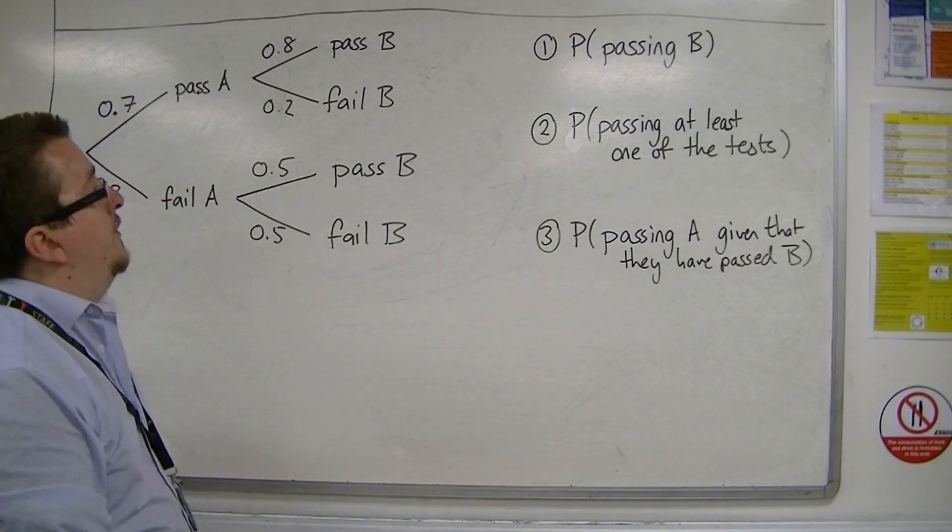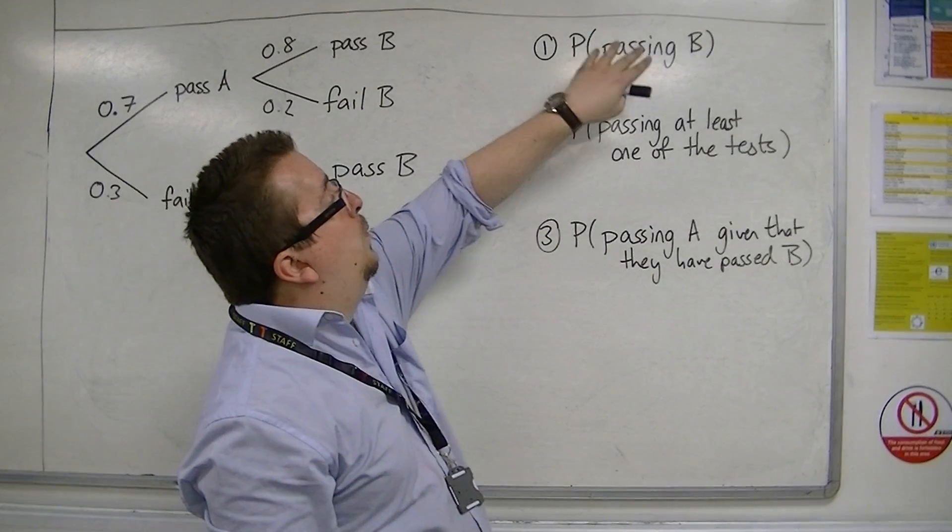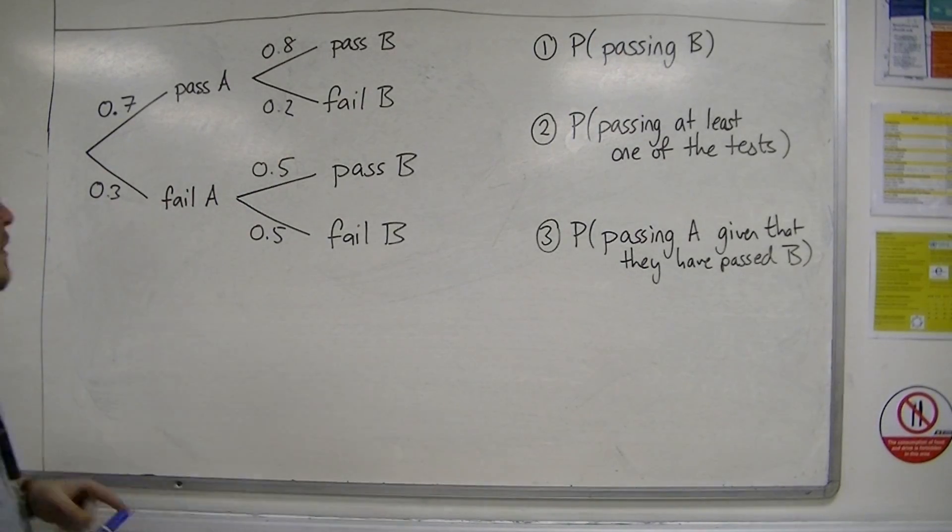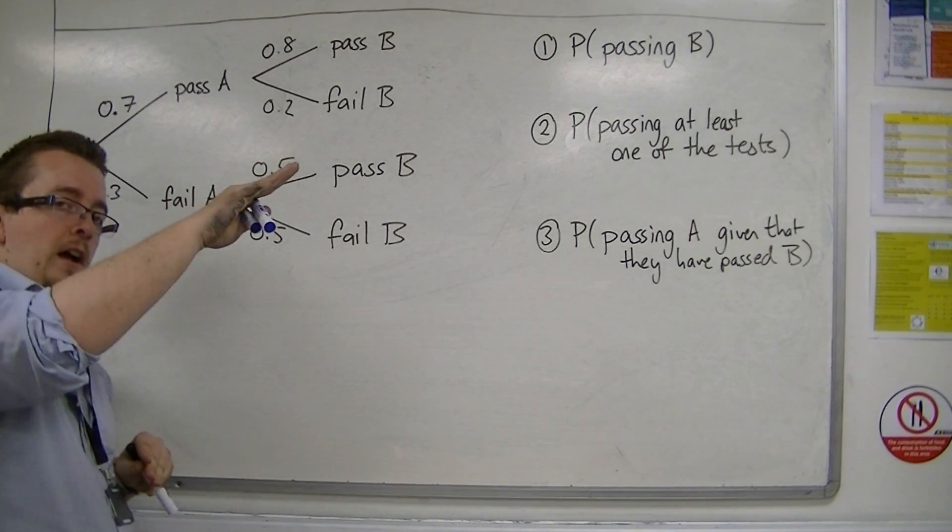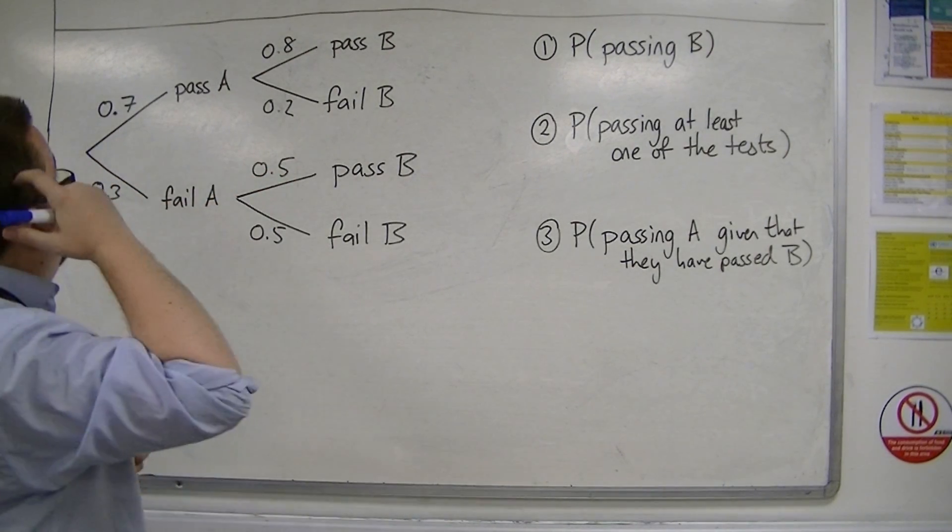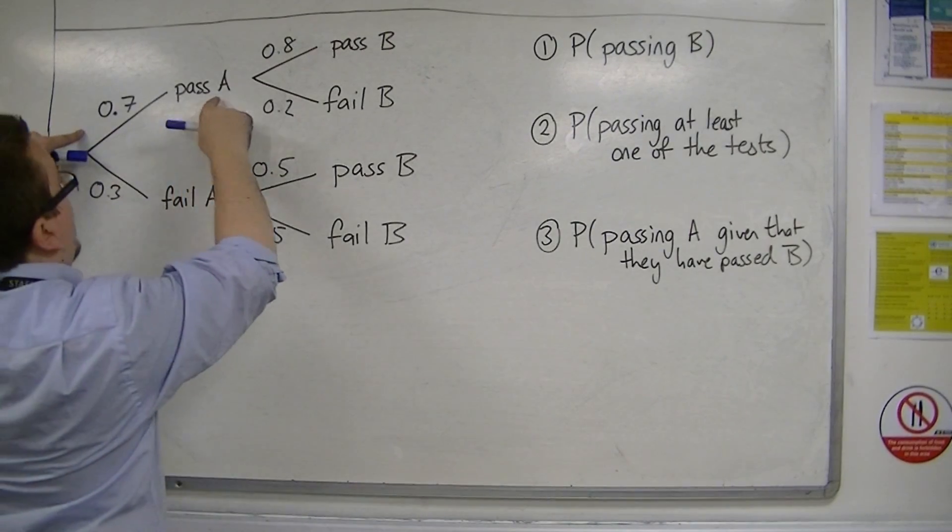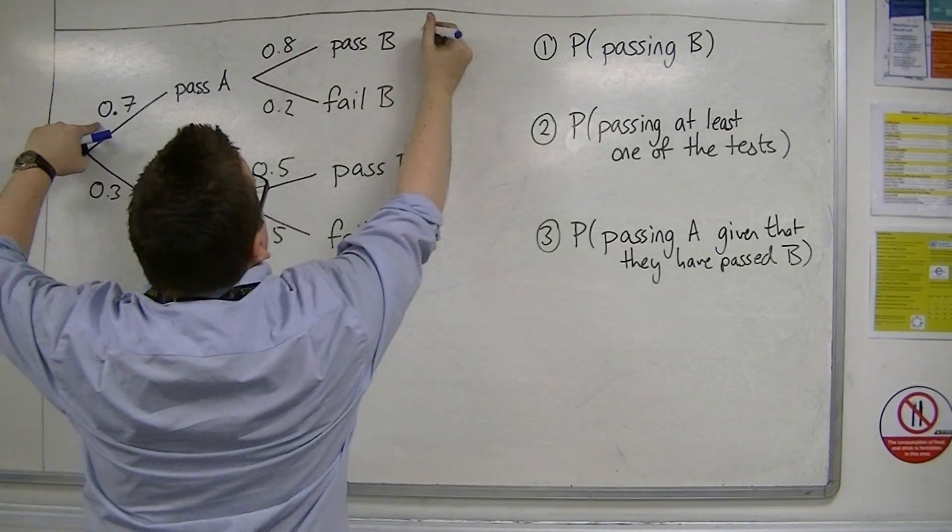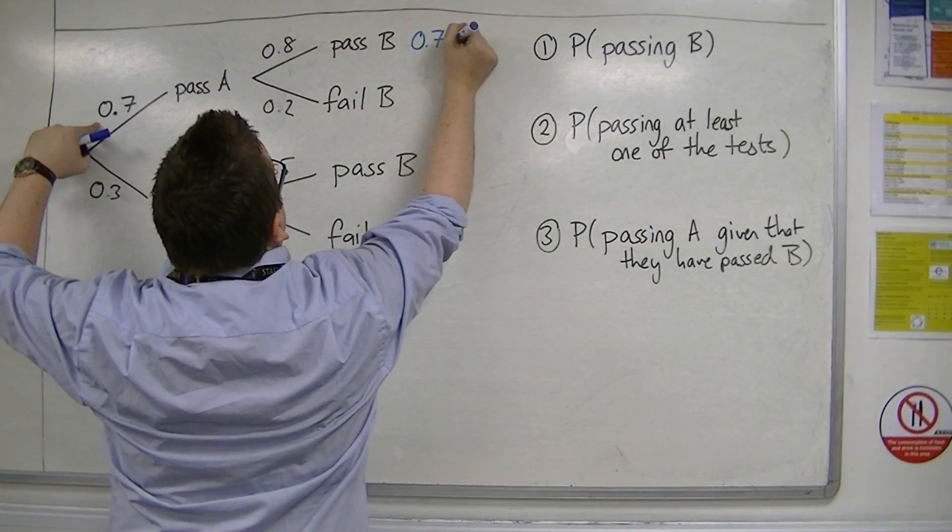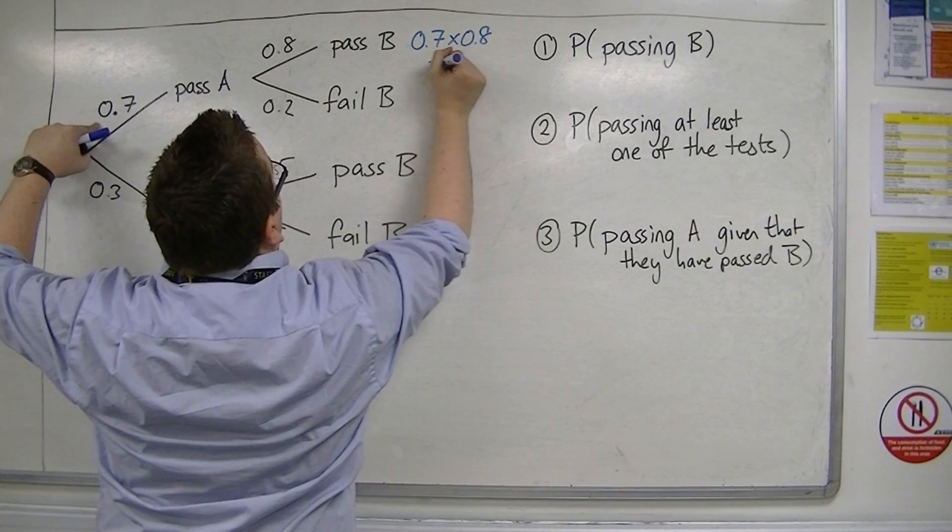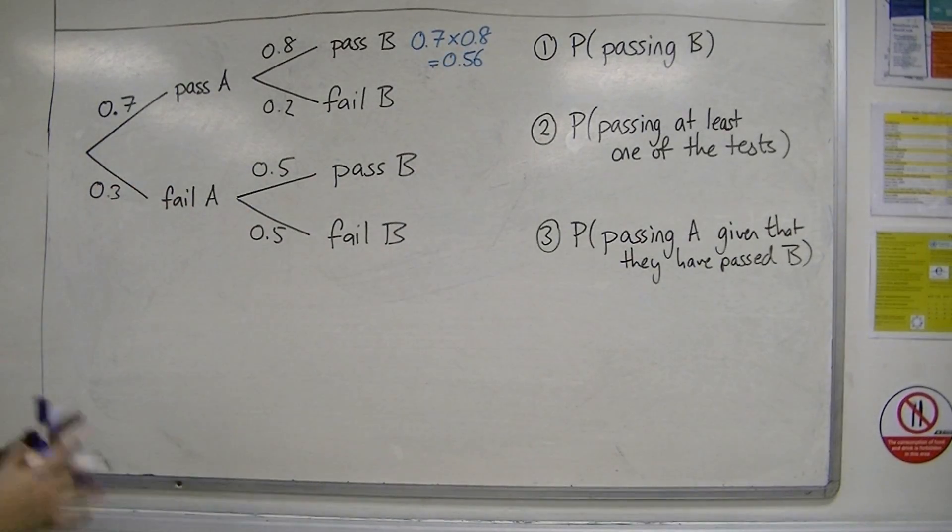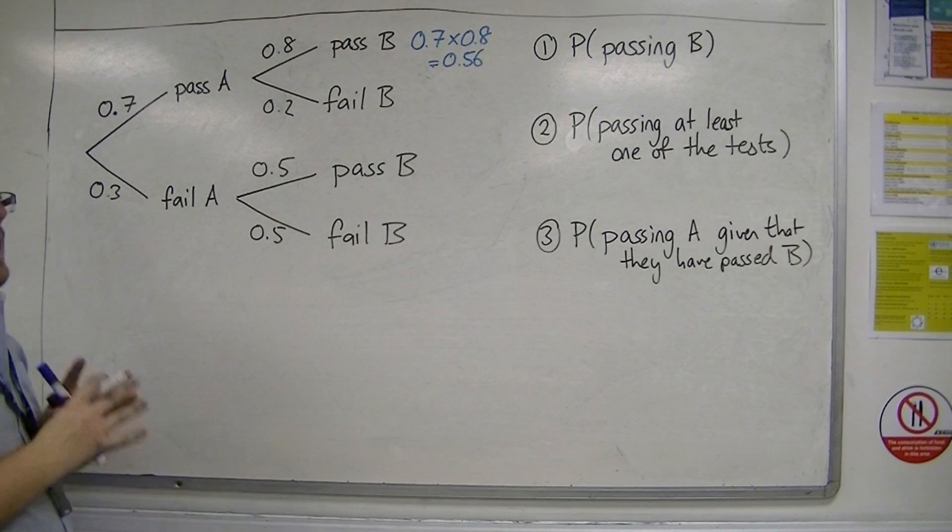What we're going to do is answer these three questions. What is the probability of passing B? With a tree diagram, you multiply along the branches. So the probability of passing A and then passing B is 0.7 times 0.8, which equals 0.56.